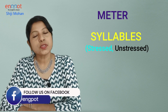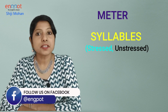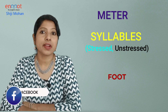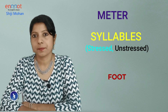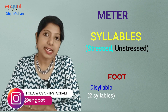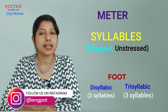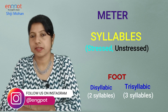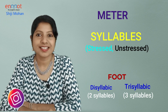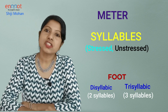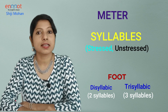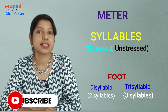Poetry uses different types of feet depending on how these syllables are arranged in a line. They can be disyllabic feet and trisyllabic feet. Disyllabic means a foot that consists of two syllables, and trisyllabic means a foot that consists of three syllables.